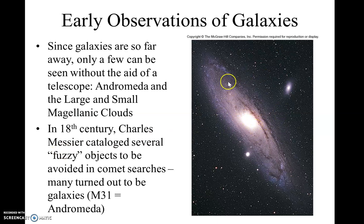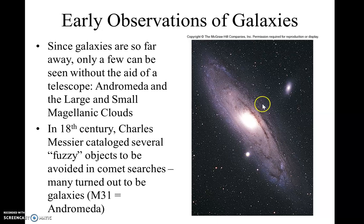Going back to Andromeda, Charles Messier did not know that he was creating a catalog of galaxies. The M numbers aren't just galaxies — for example, M1 is the supernova remnant in the constellation Taurus. He had no idea what these things were when he first cataloged them, so he just came up with these hundred-odd objects.